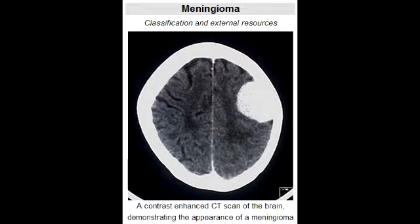Where do meningiomas occur? Meningiomas most often occur in convexities of hemispheres near the surface of the brain and at the parasagittal region. Meningiomas arise from the arachnoid cells and are extraaxial, which means they are external to the brain parenchyma, and may have dural attachment, which is considered the tail.